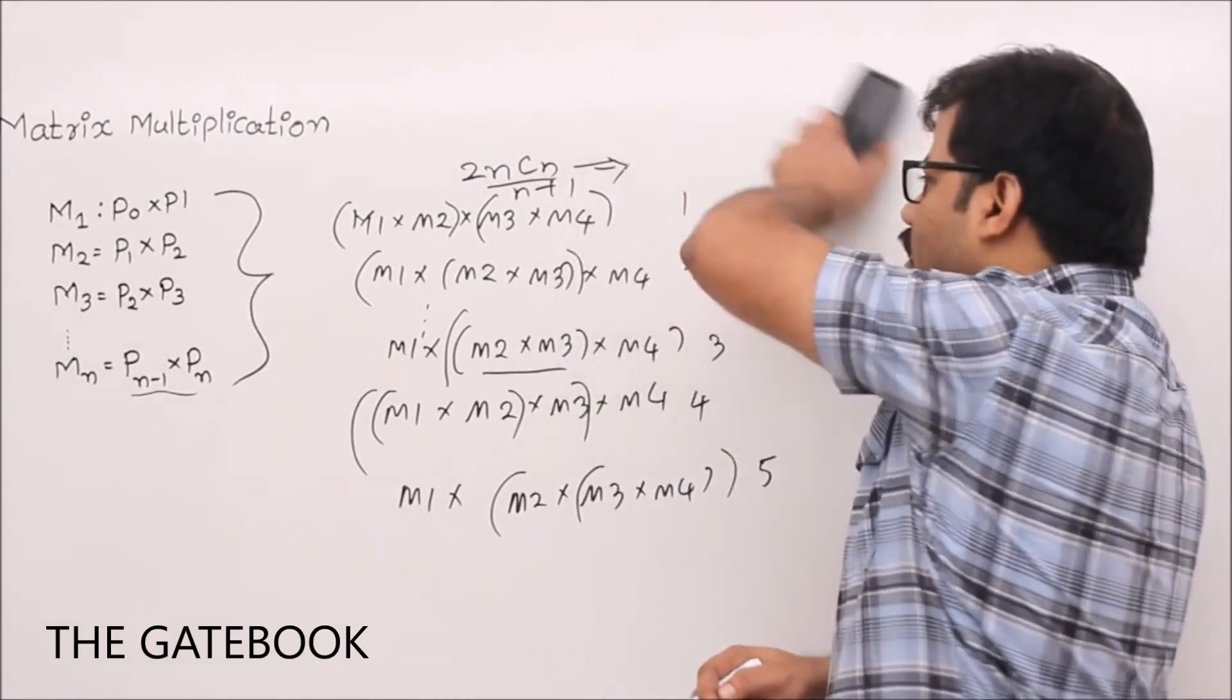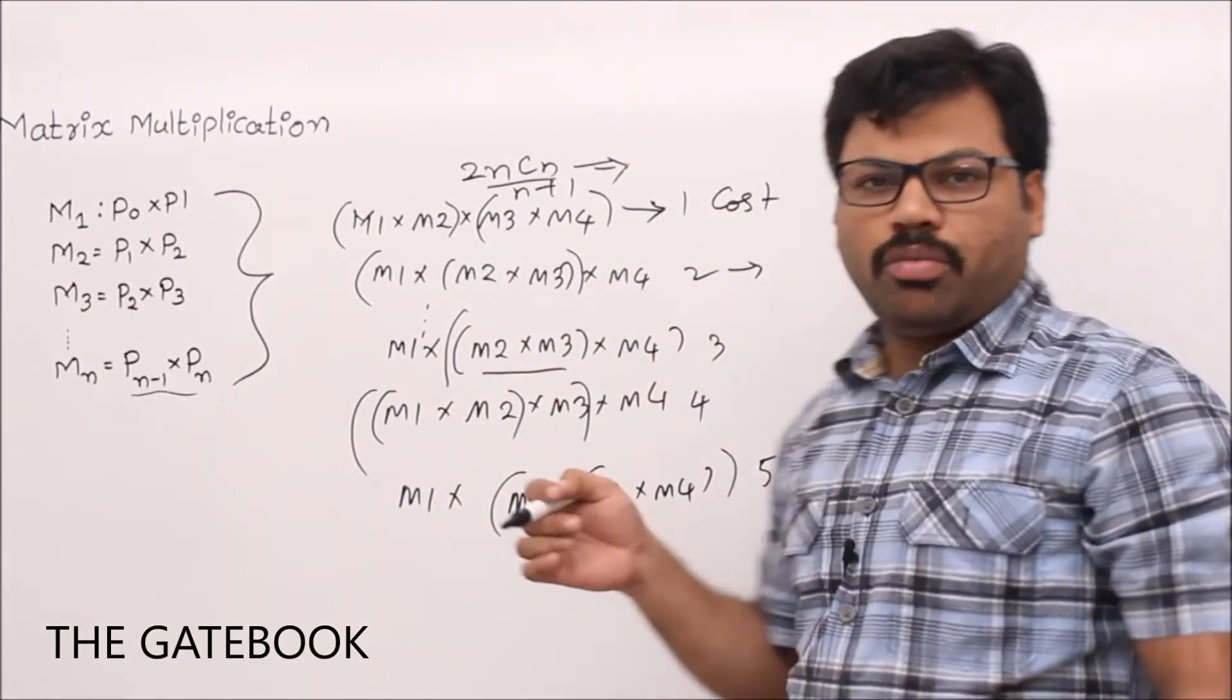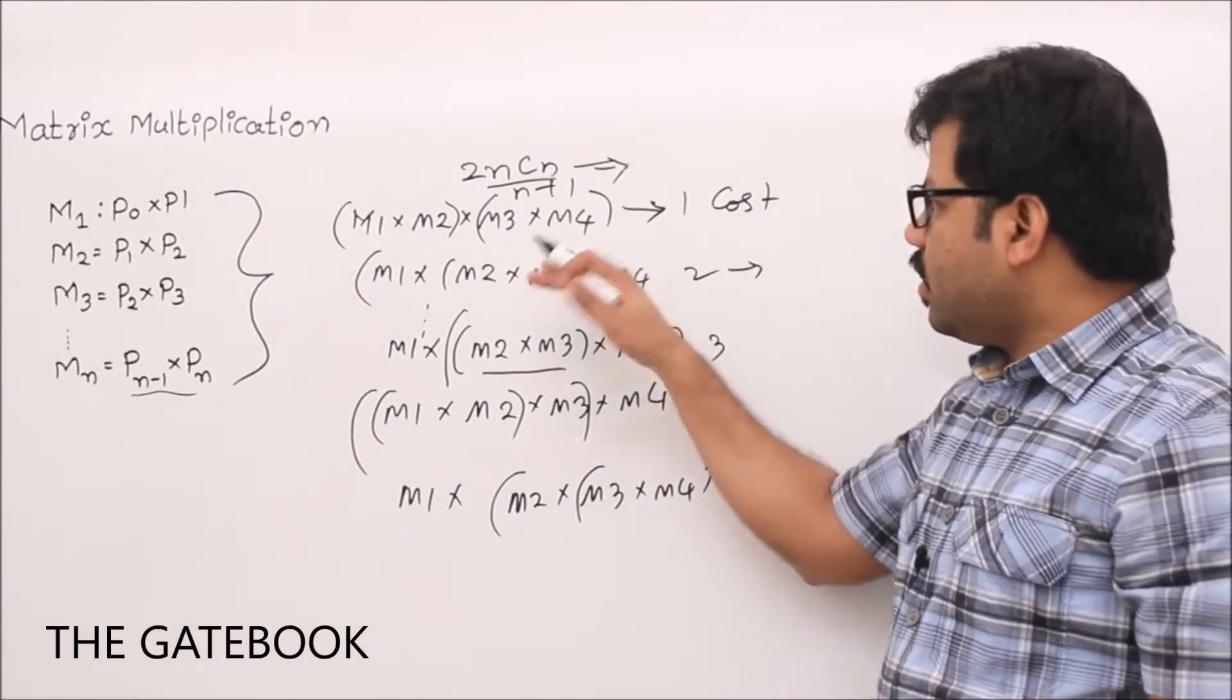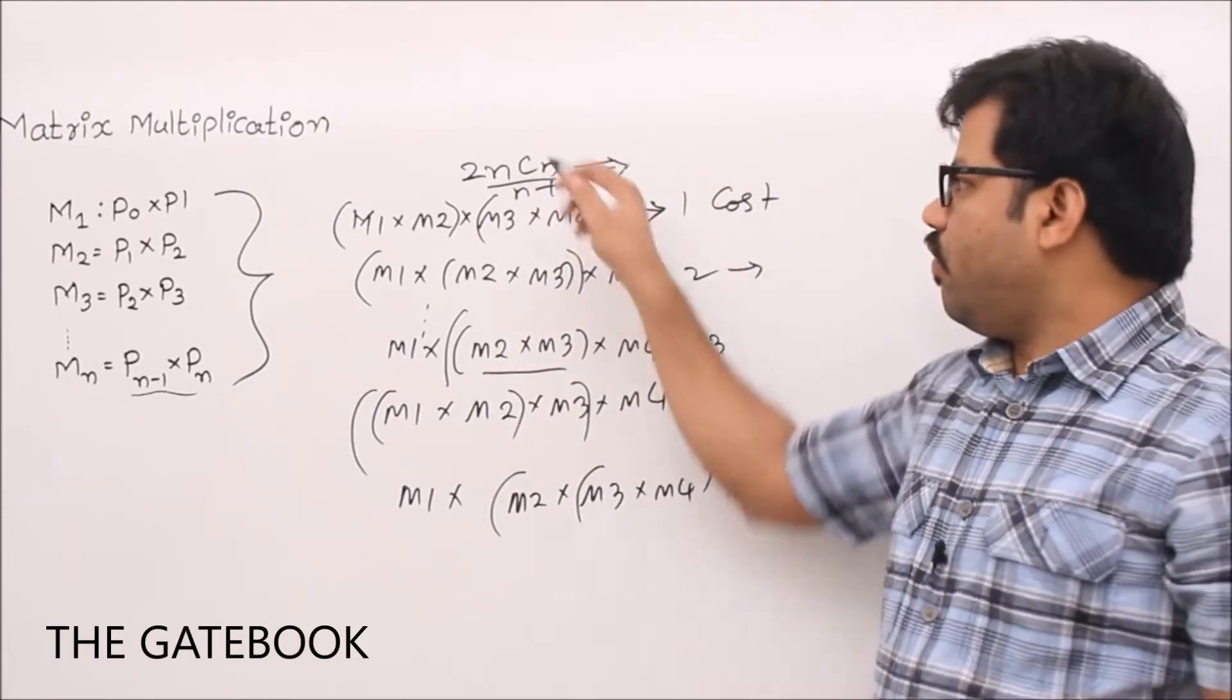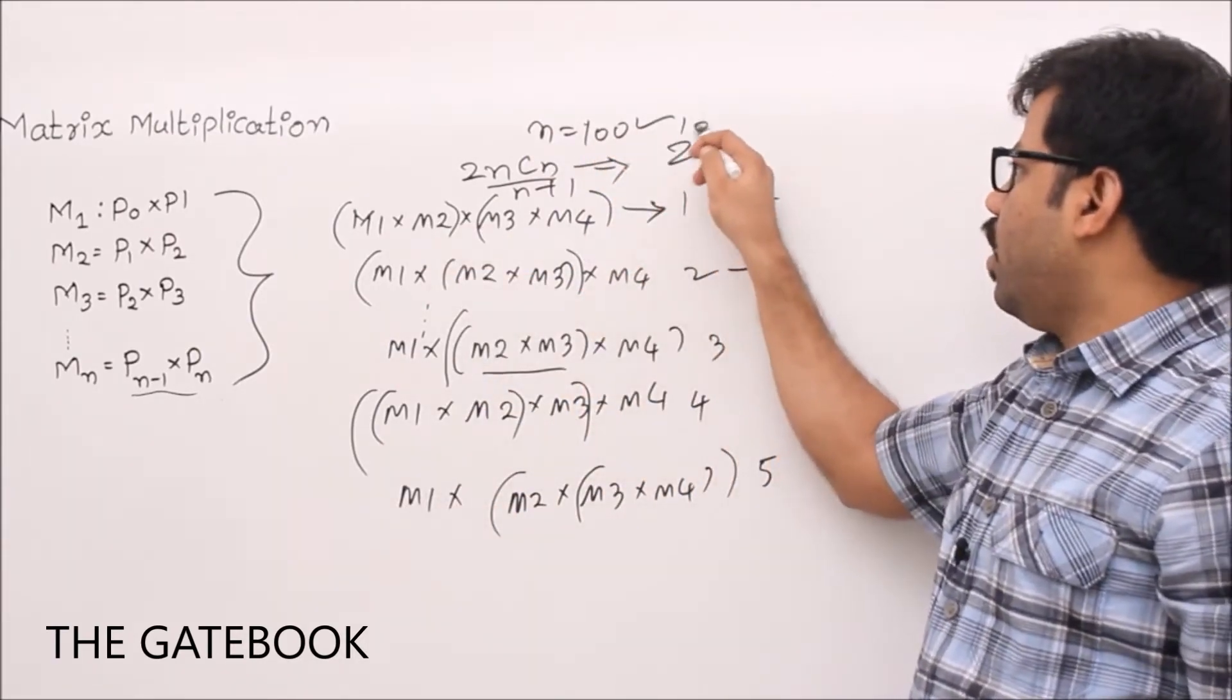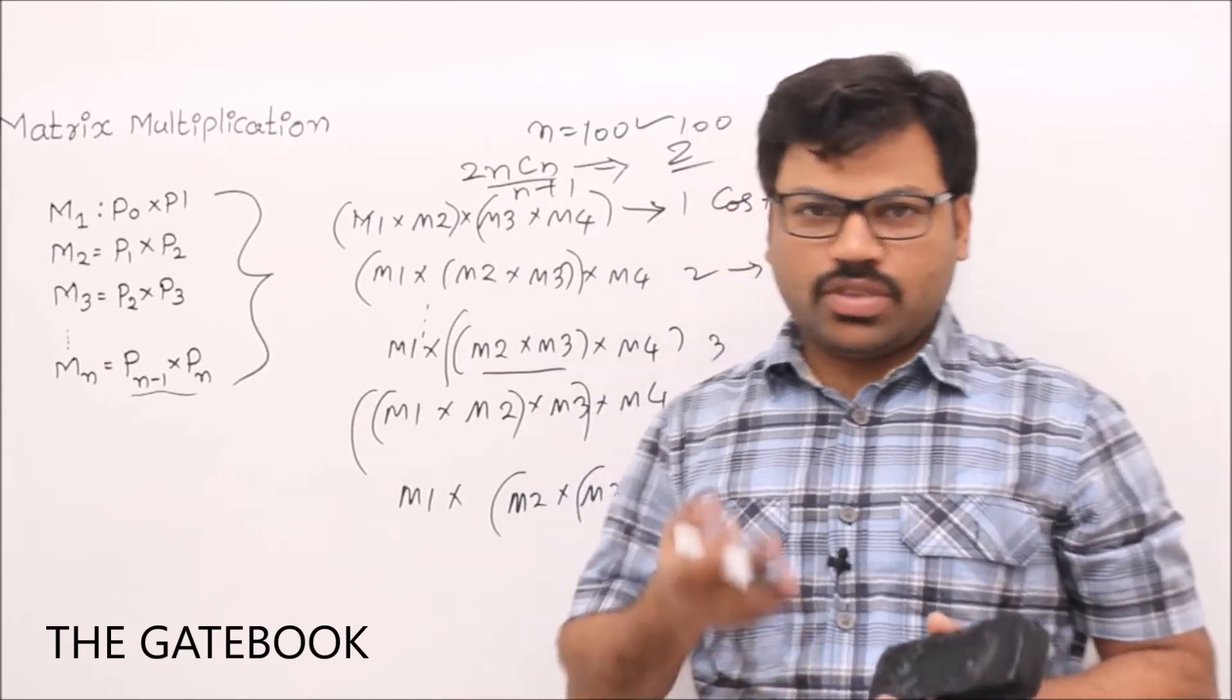That's why I would like to say that if I try to parenthesize your problem in all possible ways, for everything if I find out the cost, then I can solve the problem. Once I find out the cost, I will find out the best cost, correct? But that parenthesization is taking 2^n time minimum. If n value is 1000 or 100, then automatically the number of such combinations will become 2^100 minimum, and it is a very large number. It is more than the number of atoms in the universe.